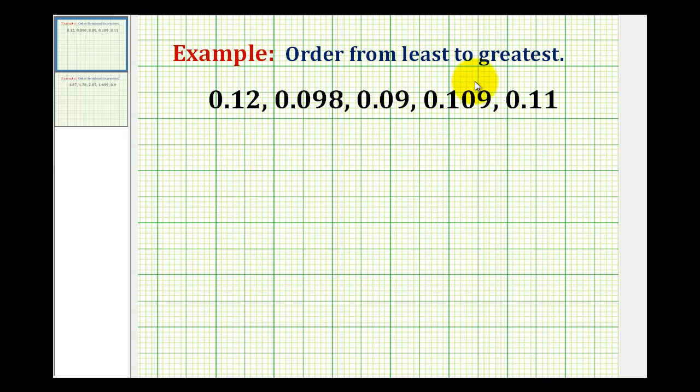We want to order the following decimals from least to greatest. And this can be a little bit challenging sometimes when the decimals have a different number of digits to the right of the decimal.